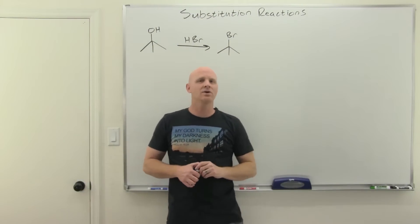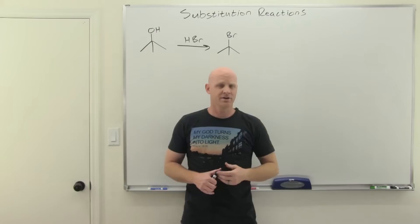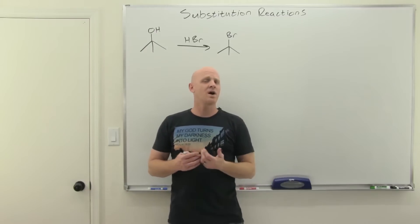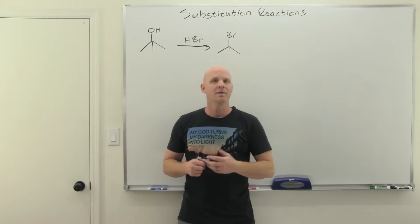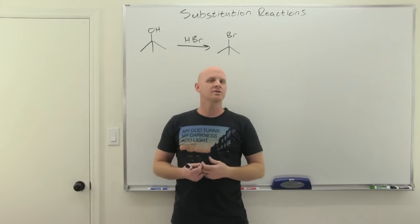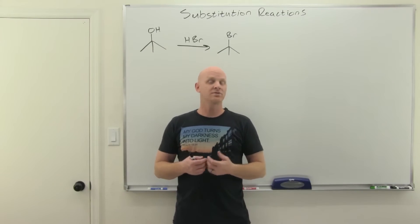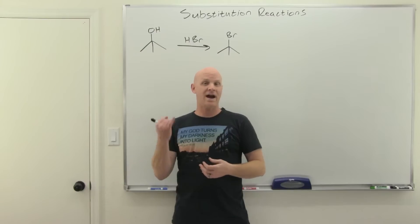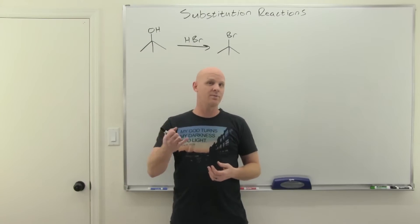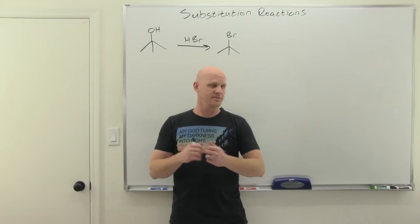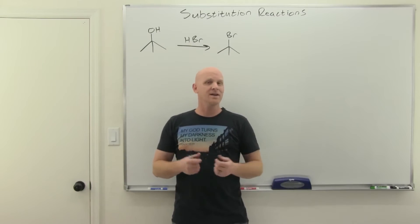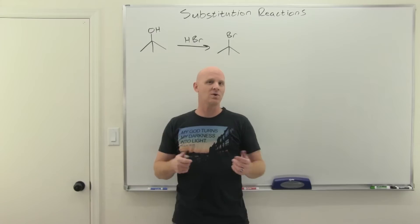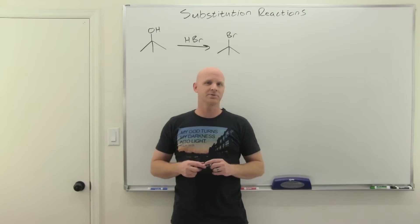Substitution reactions of alcohols. A hydroxyl group is not a good leaving group, but in this lesson we're going to explore a few different ways to turn it into either a halogen — chloride, bromide, or iodide — which are good leaving groups, or into what's called a sulfonate ester, which is also a good leaving group.